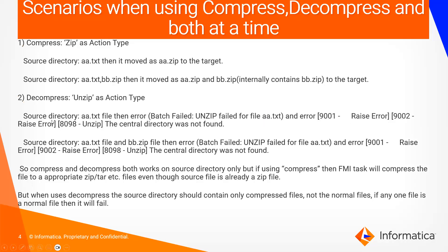The error codes you will see are 9002 and 8098: unzip — the central directory was not found. If you have both a.txt and bb.zip in the source directory, it will also fail with the same error, because a.txt is a normal file. Even though there is a compressed file present, it won't decompress and move to the target. Compress and decompress both work on the source directory, but when using decompress, the source directory should contain only compressed files.